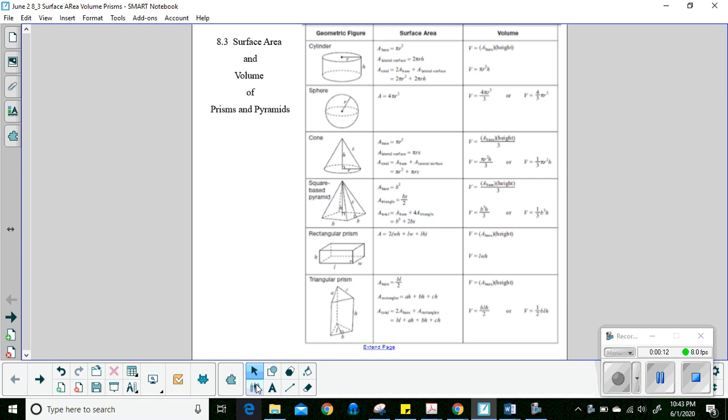And what we're going to be looking at are triangular prisms today, rectangular prisms, and the square-based pyramids. We're going to save the other ones for later.